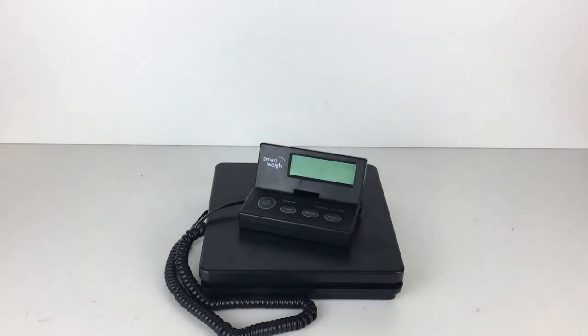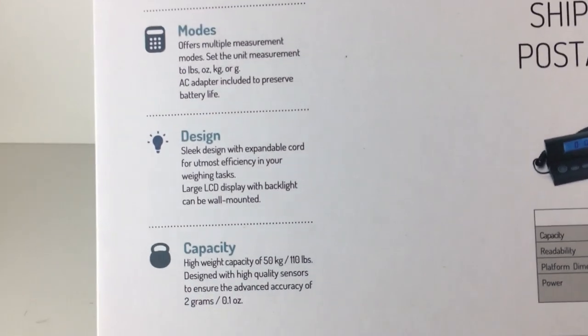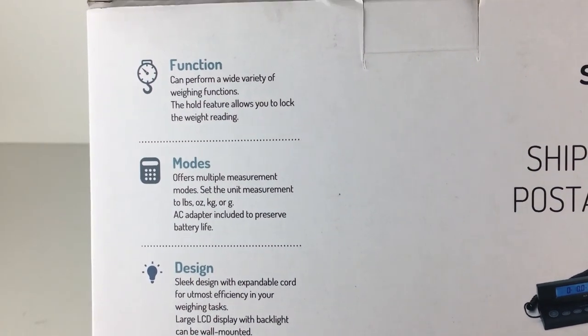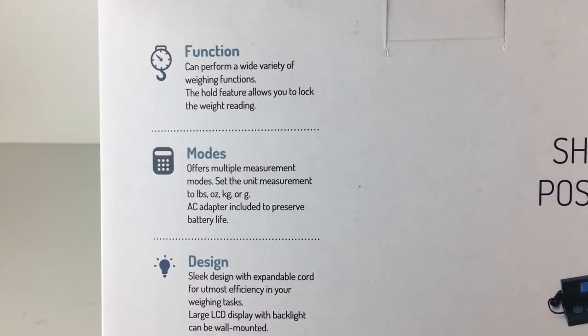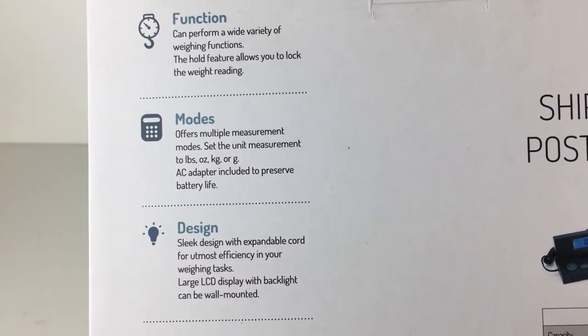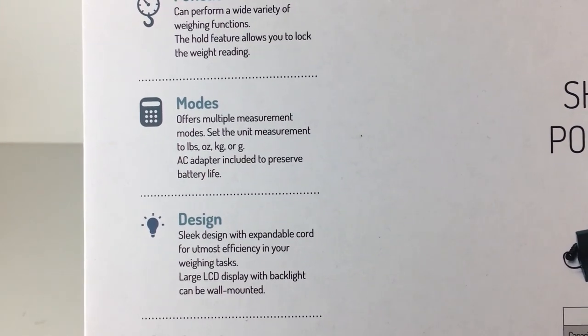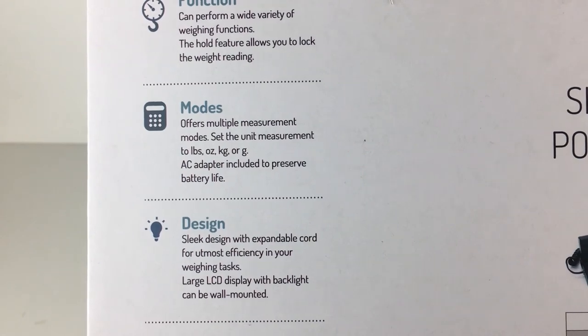So that's the front of the box, I will flip you around to the back. So again just a bit more advertising on the back, advertising different functions and stuff that it has. So the modes - it offers various different modes from pounds, ounces, kilograms or grams.